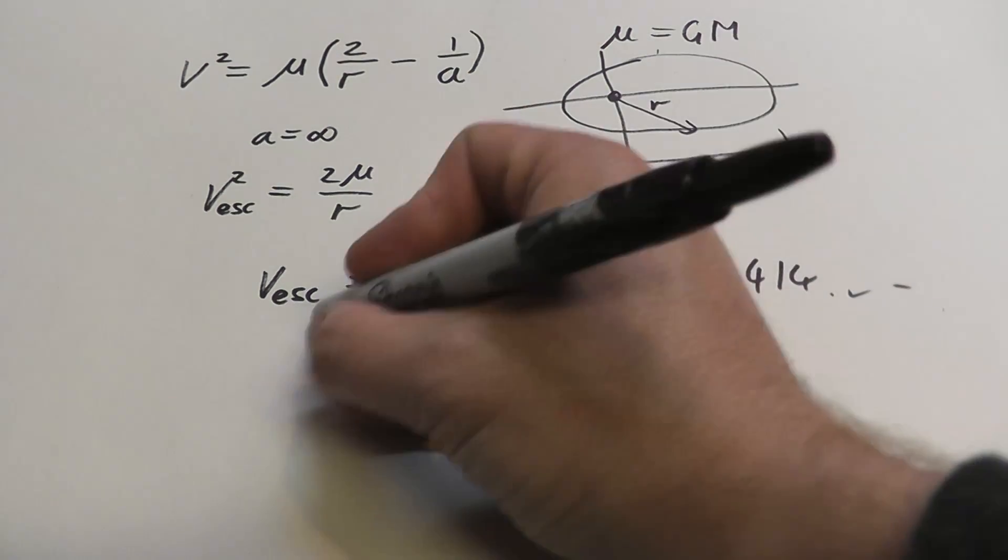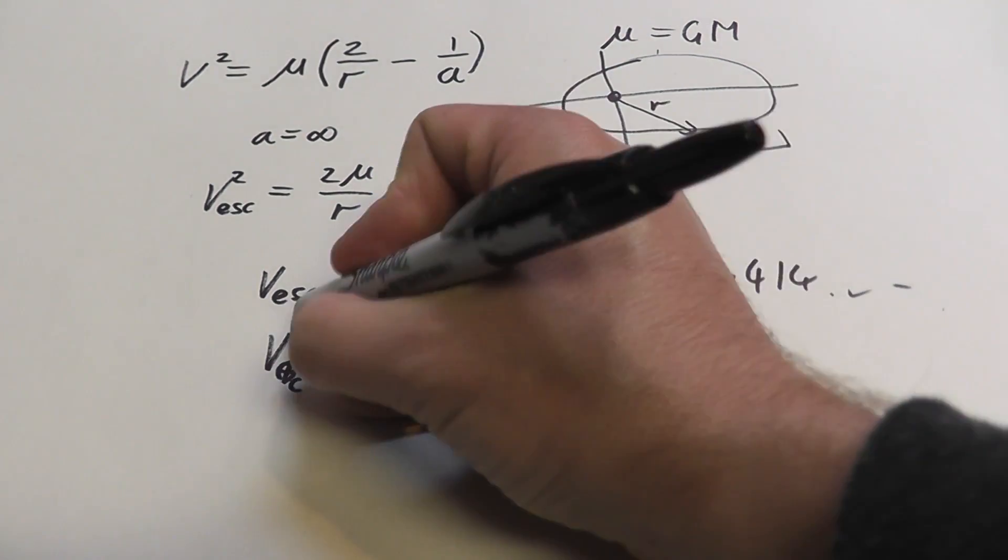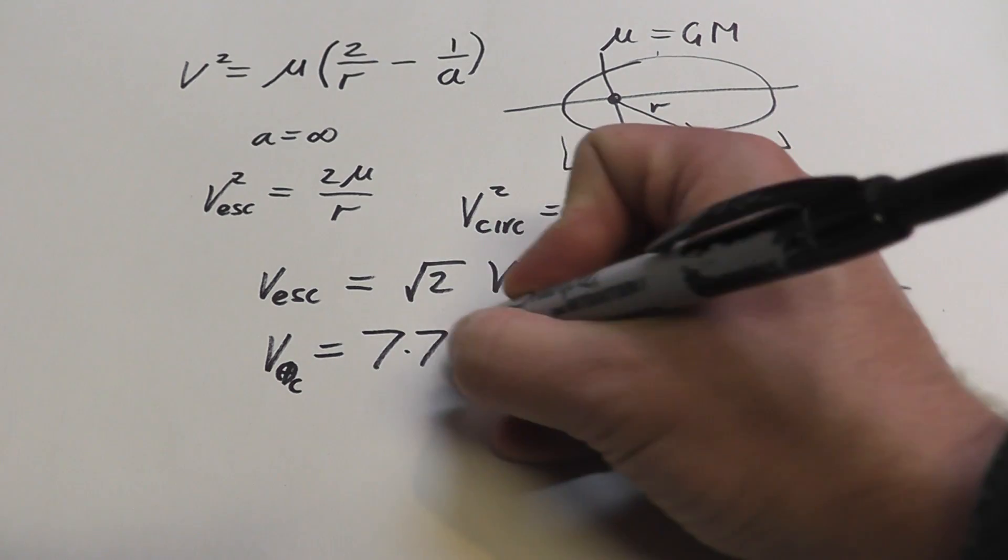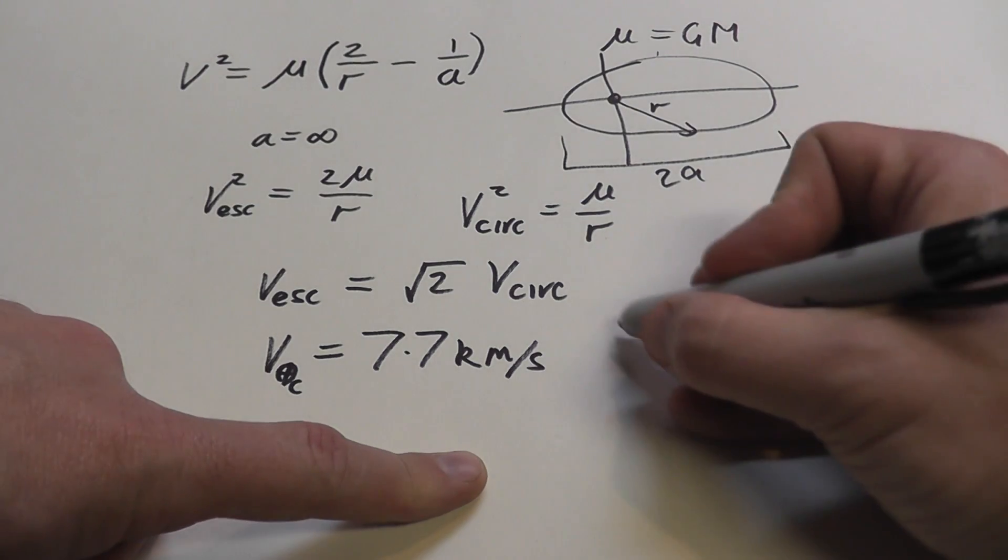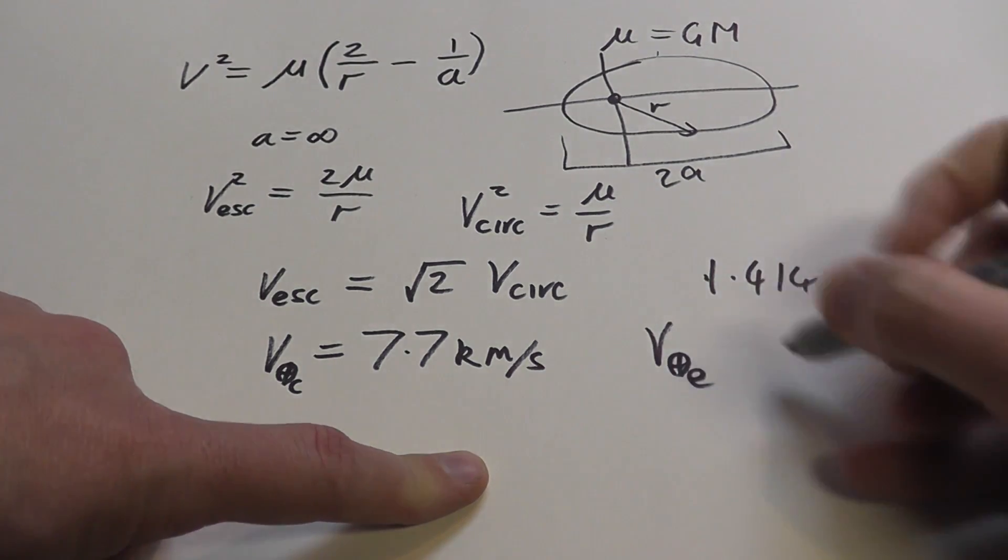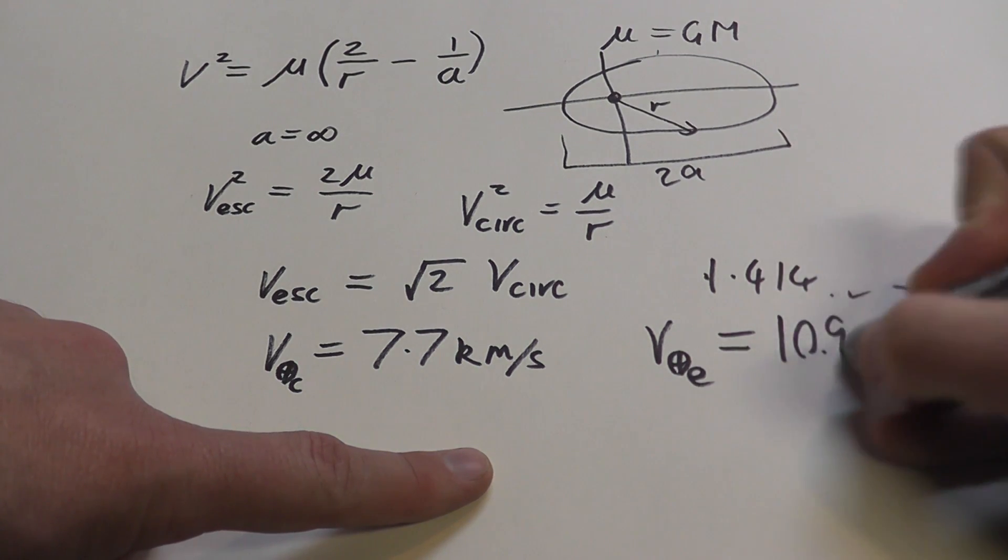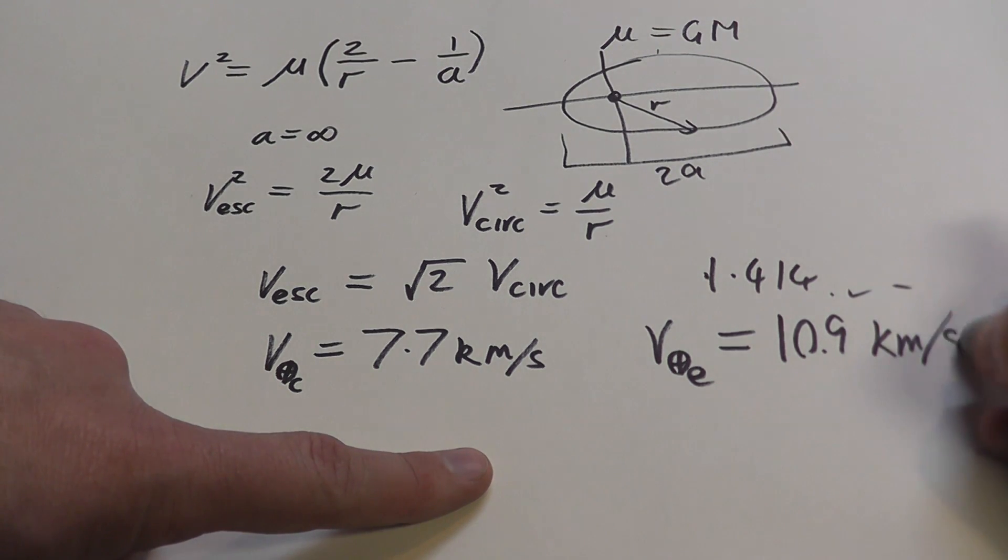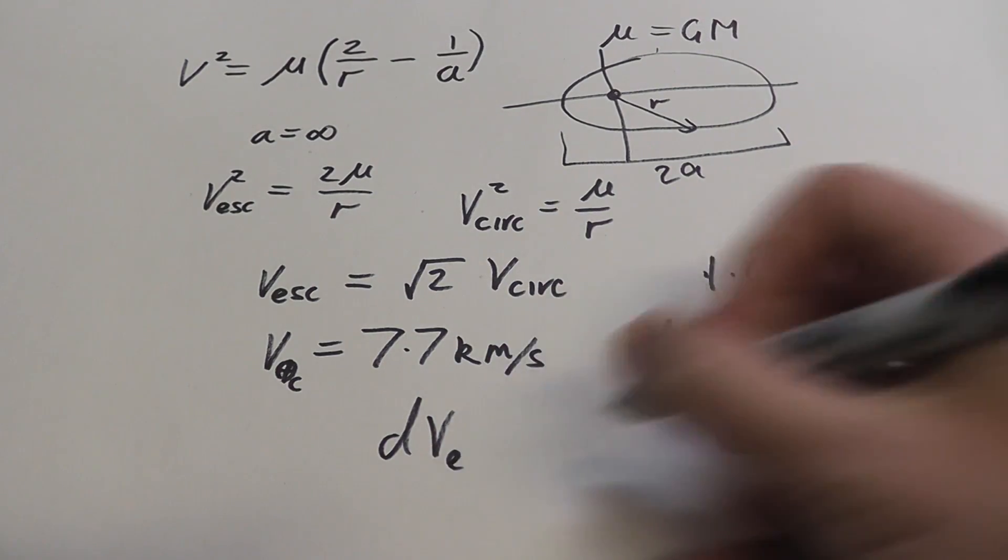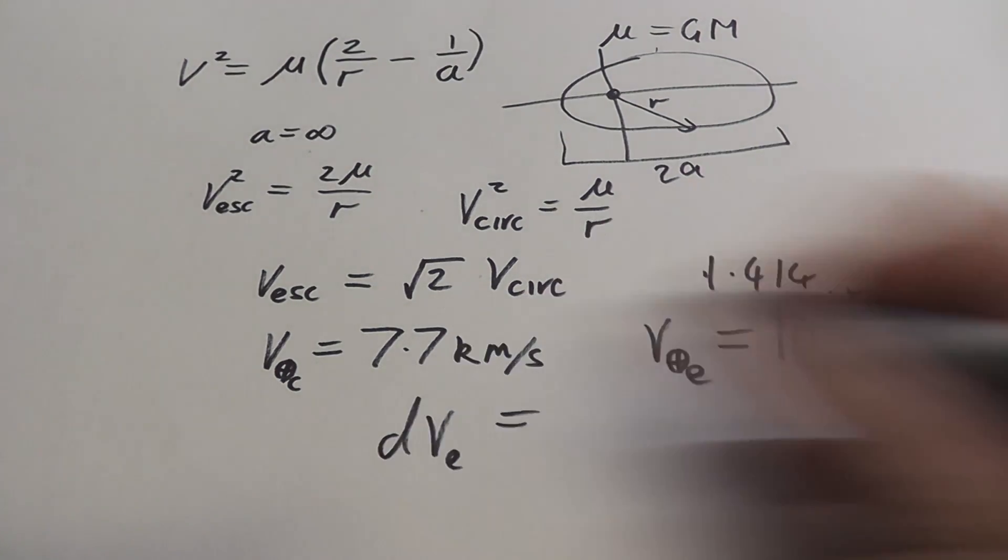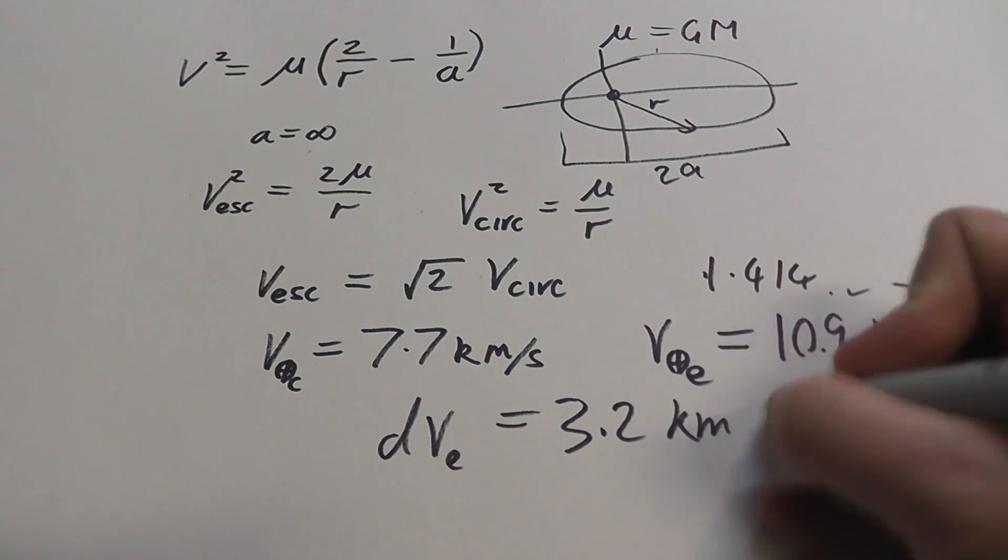So, roughly, in a low Earth orbit, v circ, vc, is roughly 7.7 kilometers per second. And that's about just over 300 kilometer orbit. So, that would mean that velocity of Earth escape would be about 10.9 kilometers per second. And that was sky in the background. So, to get to escape velocity, dv, delta v escape, is basically this minus this, which is about 3.2 kilometers per second.